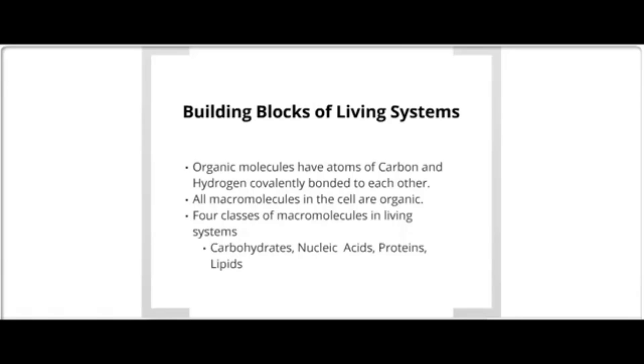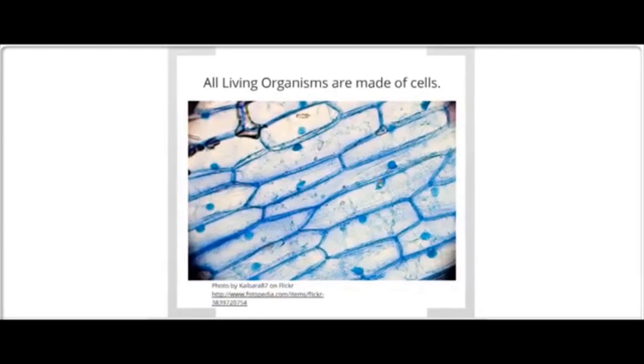These macromolecules are found in four different categories: carbohydrates, nucleic acids, proteins, and lipids. You may have heard of these molecules in relation to human nutrition and the food that we eat. And the reason for that is because these are the molecules that make up cells. And most of the food that we eat comes from organisms that were alive, whether we're talking about plant or animal material.